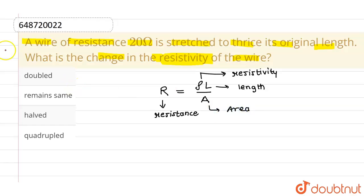Okay, now let me tell you that resistivity only depends on the type of material of the wire. It does not depend on the dimensions of the wire.